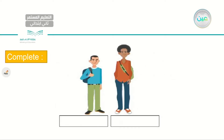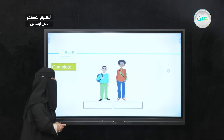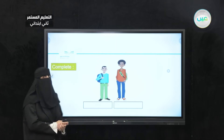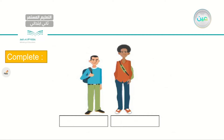Let's have another example. Here I have two friends. Let's describe them — pick the right adjective and go with the opposite. Shall we use fat and thin here? No. Can we use small and big? The man to your left is short, while his friend is tall. Short, tall — he is short and the other man is tall. Very good.